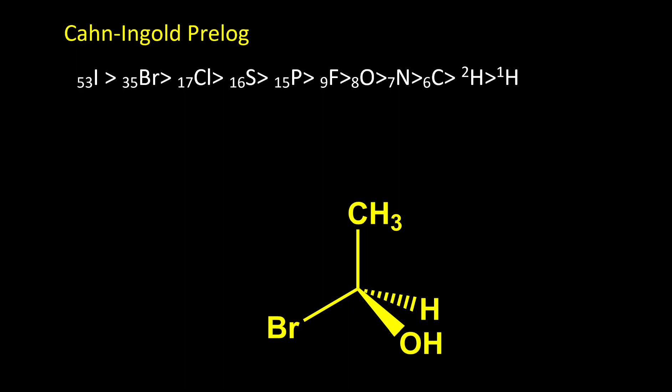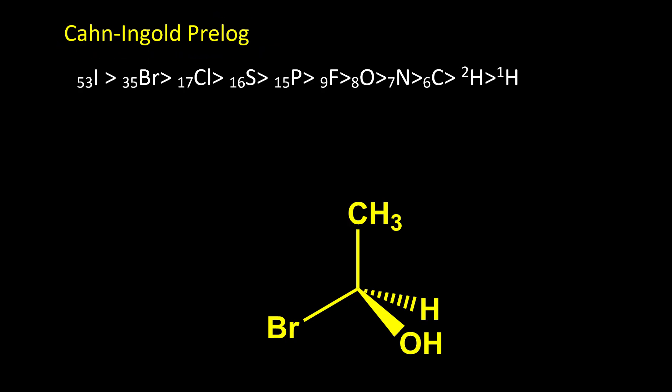We use the Cahn-Ingold-Prelog system for identification of a chiral center. This rule has three steps. The first step: we need to rank the groups attached to the chiral center.